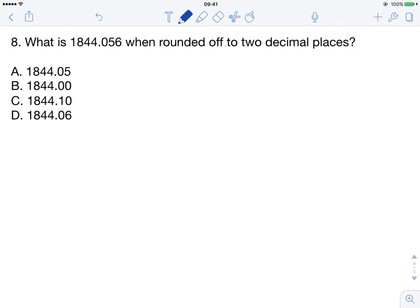Okay, so let's look at the 8th question from the 2009 KCPE Maths paper. The question is, what is 1844.056 when rounded off to 2 decimal places?